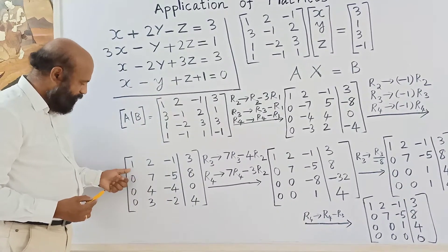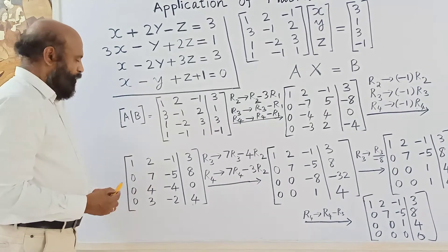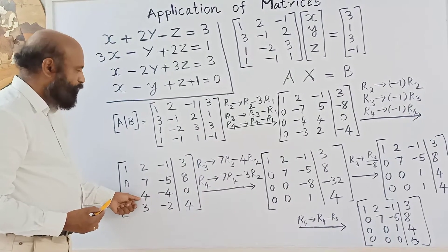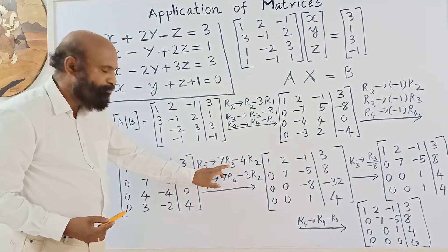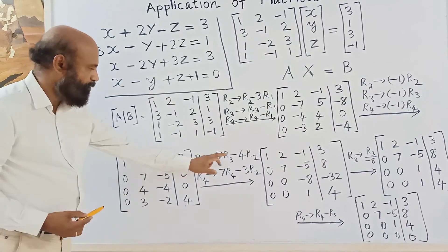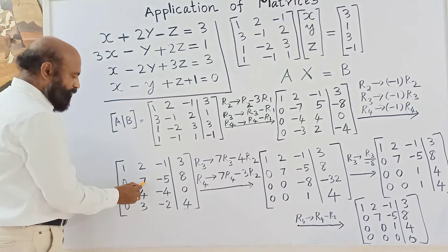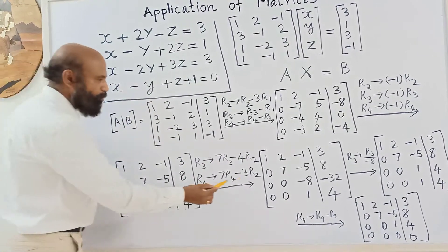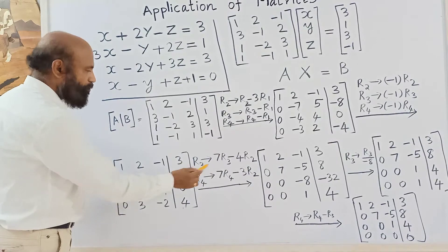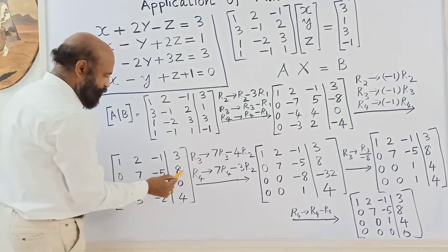After adjustments, the matrix has 1, 0, 0 in the first row and 7 as the leading entry in the second row. To make zero below the 7 in the second column, since the third row has entry 4, we multiply the third row by 7 and the second row by 4, then subtract. 4×7 = 28 and 7×4 = 28, so 28 - 28 = 0. We apply this to all elements of those rows.